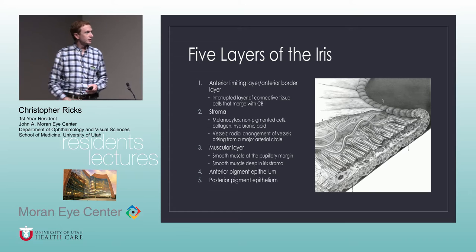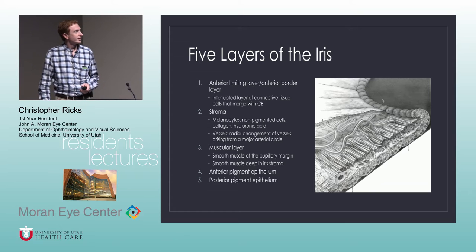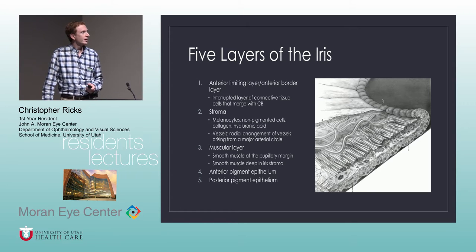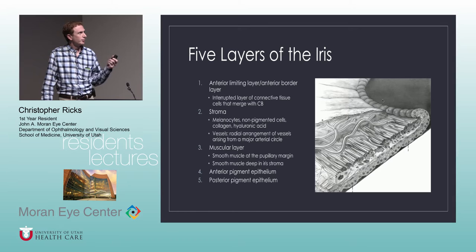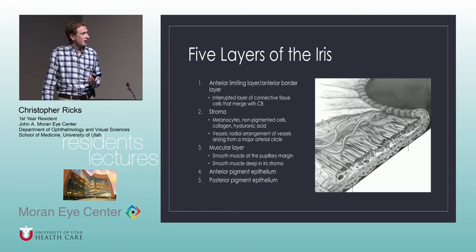The other way to look at it is more histologically. There are five layers that we classically talk about. The anterior limiting layer, or the anterior border, and that is interrupted by connective tissue that blends with the ciliary body. Then there's the stroma, which is sort of the meat of the iris that has melanocytes, the vessels, and other things we'll talk about in more detail.